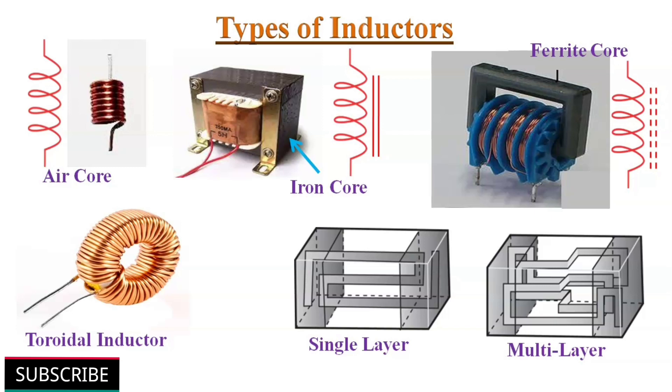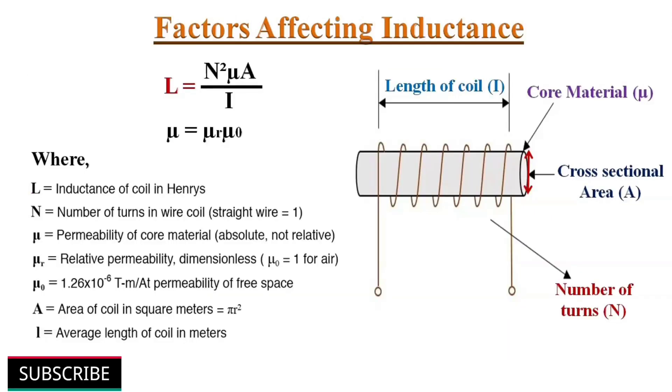An approximate inductance of any coil of wire can be found with the formula L equals N squared mu A divided by l, where L equals inductance in henries, N equals number of turns in the coil, mu equals absolute permeability of core material, A equals cross-sectional area of the coil, and l equals length of coil in meters.